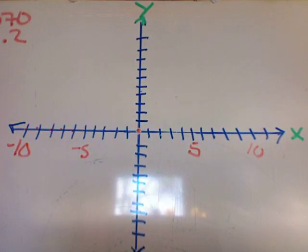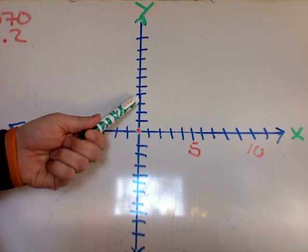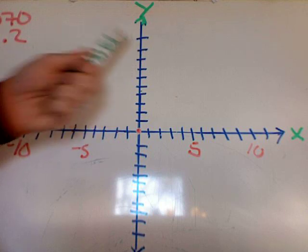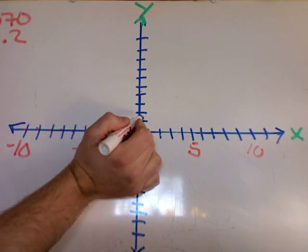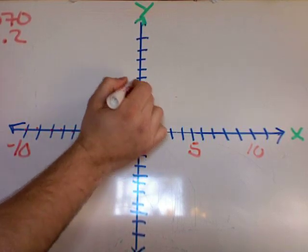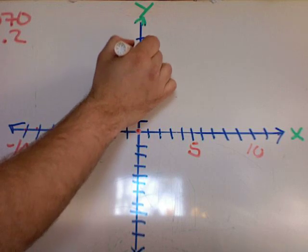Now, in my y-coordinate system here, it can have its own scale. Instead of counting by ones, I could count by twos: two, four, six, eight, ten. And continuing: twelve, fourteen, sixteen, eighteen, twenty.